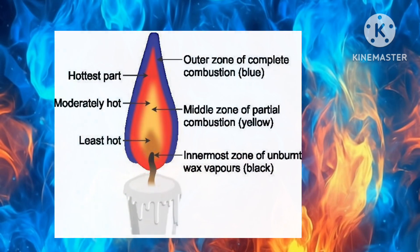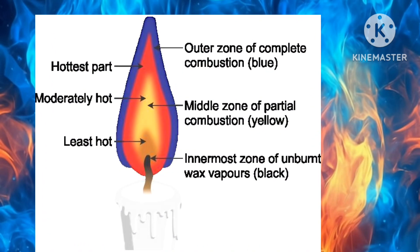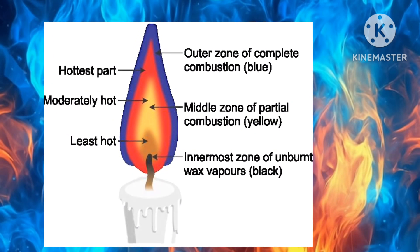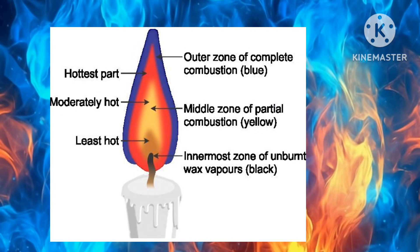The non-combustion zone, or dark zone, is seen around the wick. It is the innermost zone and contains unburnt wax vapors. Combustion does not take place here as there is no air supply. It is the least hot part of the flame.